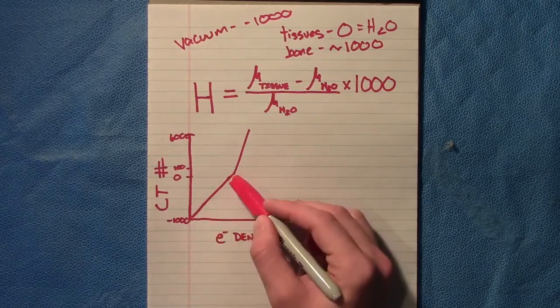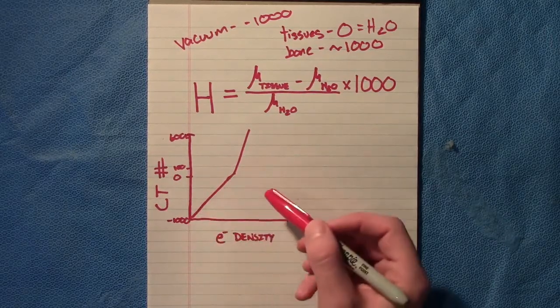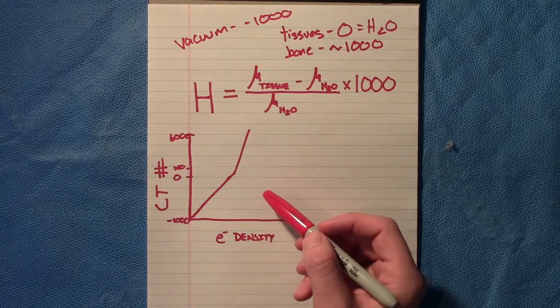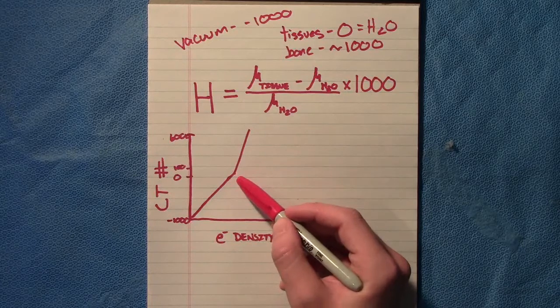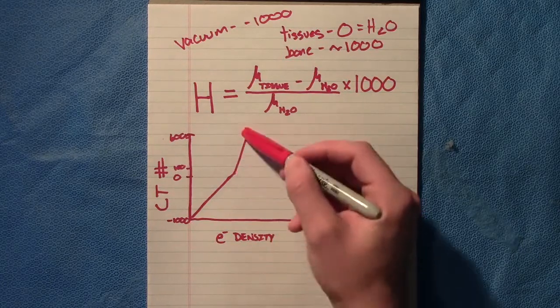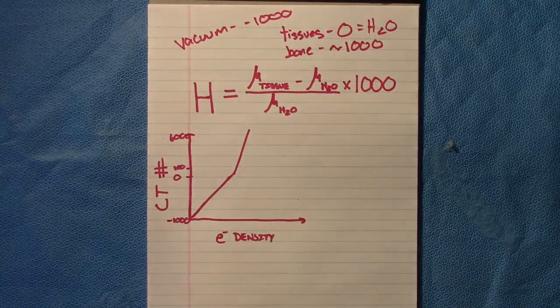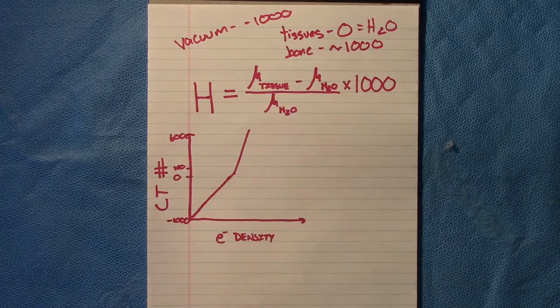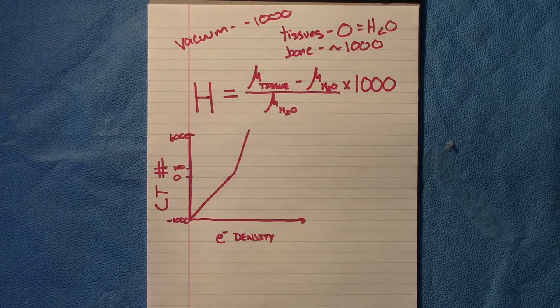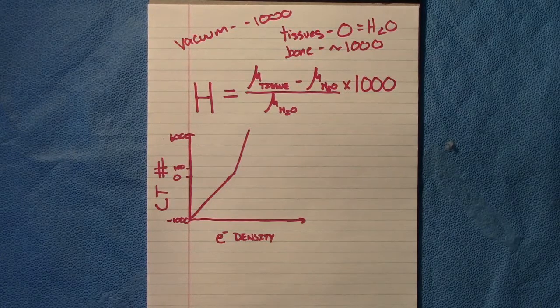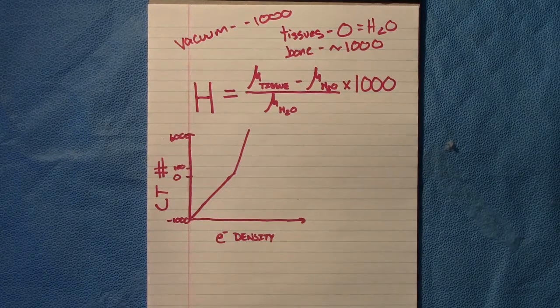But there's a point in all of your electron density curves where that linear portion is going to trend upward. It's no longer going to be linear; it's going to look something similar to this. And that is because the atomic number in the tissues changes and causes that non-linearity.